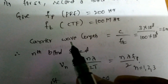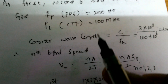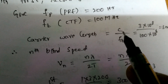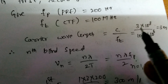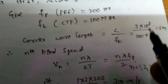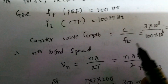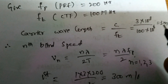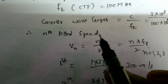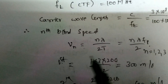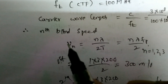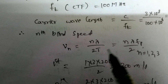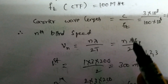We know that wavelength lambda equals c divided by the transmitter frequency ft, where c is the velocity of light, 3 × 10^8 m/s. With ft equal to 100 MHz (100 × 10^6 Hz), lambda equals 3 meters. The nth blind speed formula is: vn = n × lambda / 2 × T, where 1/T equals fp.